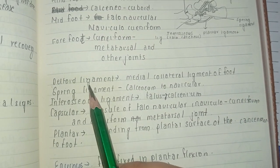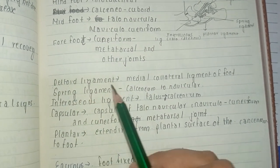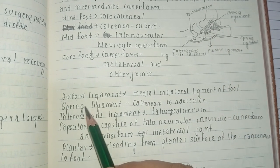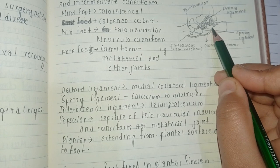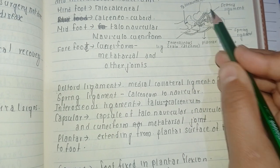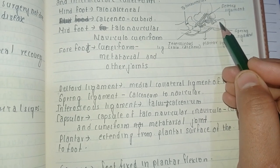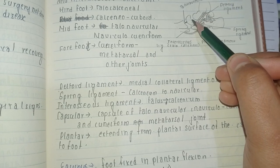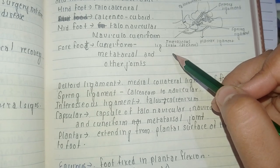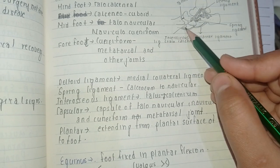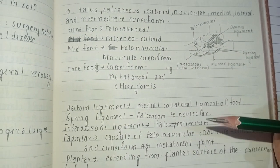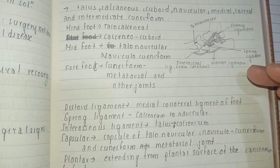The ligaments of the foot include: the deltoid ligament, which is the medial collateral ligament; the spring ligament, which connects the calcaneum to the navicular; the interosseous ligament, which connects the talus to the calcaneum; the capsular ligament covering the talonavicular, naviculocuneiform, and cuneiform-to-metatarsal joints; and the plantar ligament, which extends from the plantar surface of the calcaneum to the foot.